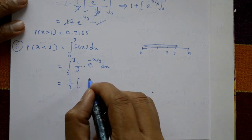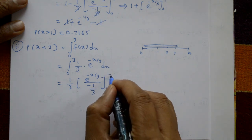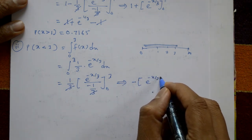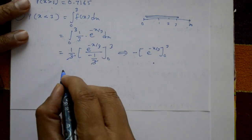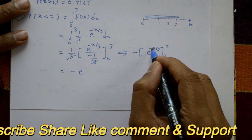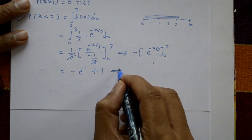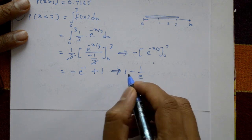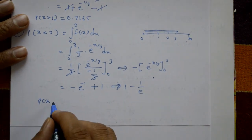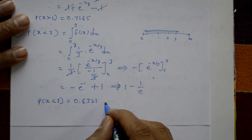(1/3) is constant; integrating e^(−x/3) gives e^(−x/3) divided by (−1/3). The 3's cancel, giving [−e^(−x/3)] from 0 to 3. Putting x = 3 gives −e^(−1), and the lower limit gives +e^0 = 1. Therefore the probability of X less than 3 equals 1 − 1/e ≈ 0.6321.